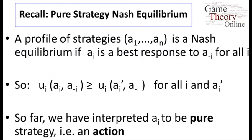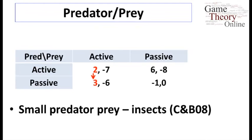Recall, in terms of pure strategy equilibrium, we're looking for a set of actions such that everybody is best responding to everyone else — we're keeping track of actions. Now, if we begin to try and solve this game, let's look at the actions of the Predator. What should the Predator do? We look at what the prey is doing. If the prey is active, then the Predator wants to be passive.